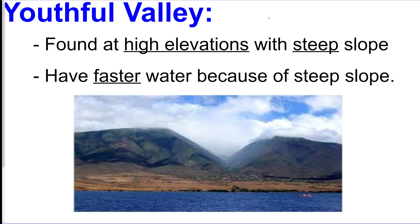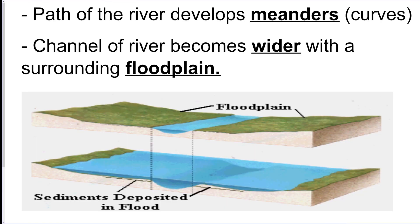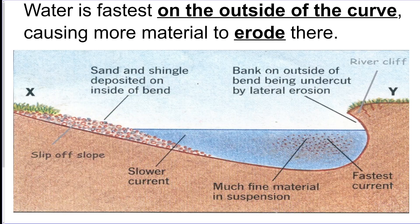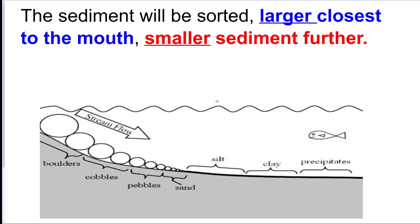River valley types: youthful valleys have faster water because they're steep; mature valleys are less steep but have more tributaries. Mature valleys start meandering, develop floodplains, widen out, and form oxbow lakes — which are cut-off meanders. On the outside of a curve, water flows fastest, so erosion occurs there. A helpful memory trick: it looks like a Nike swoosh, and the swoosh part is where erosion happens. On the inside of the curve, water is slowest, so material is deposited there.